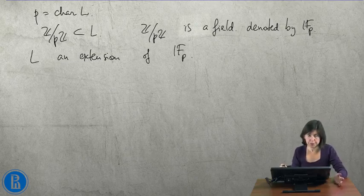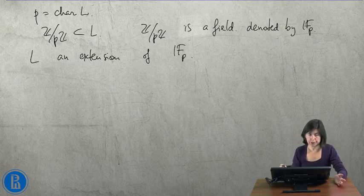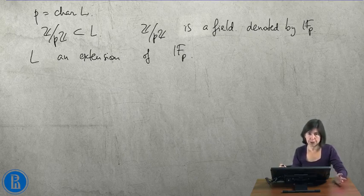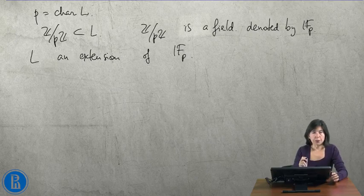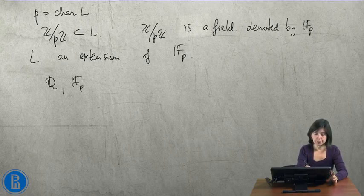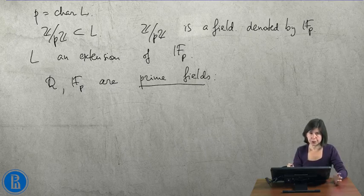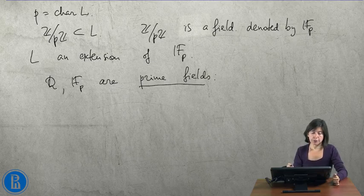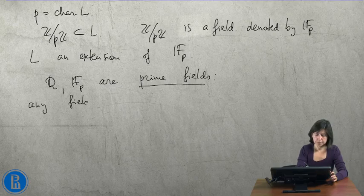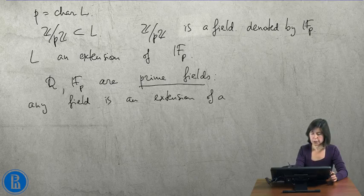So we have two possibilities. If the characteristic of L is 0, then L is an extension of Q. If it is P, then it is an extension of Fp. One calls Q and Fp prime fields. Any field is an extension of one of those, and they do not contain any proper subfields. Any field is an extension of a prime field.